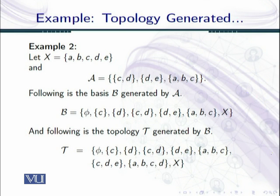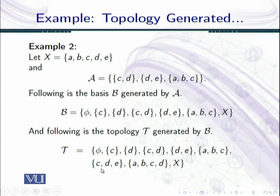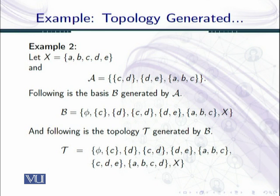One can see that φ, {c}, {c,d}, {d,e}, {a,b,c}, and X automatically become elements of the topology. Additionally some more elements are generated: {a,b,c} comes in directly; {c,d,e} can be generated by taking the union of {c,d} and {d,e}; and {a,b,c,d} can be generated by taking the union of {c,d} and {a,b,c}; X is generated by running the union over the full element class.